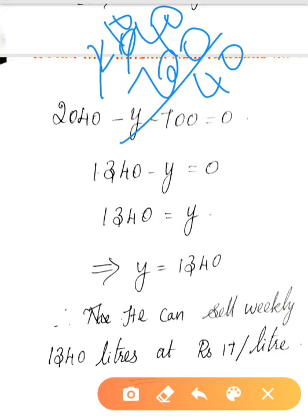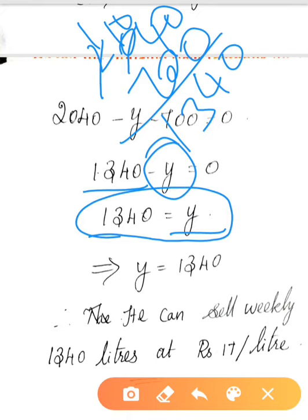2040 minus y minus 700 equals 0. This gives 1340 minus y equals 0, so y equals 1340. Therefore, he can sell weekly 1340 litres at Rs. 17 per litre.